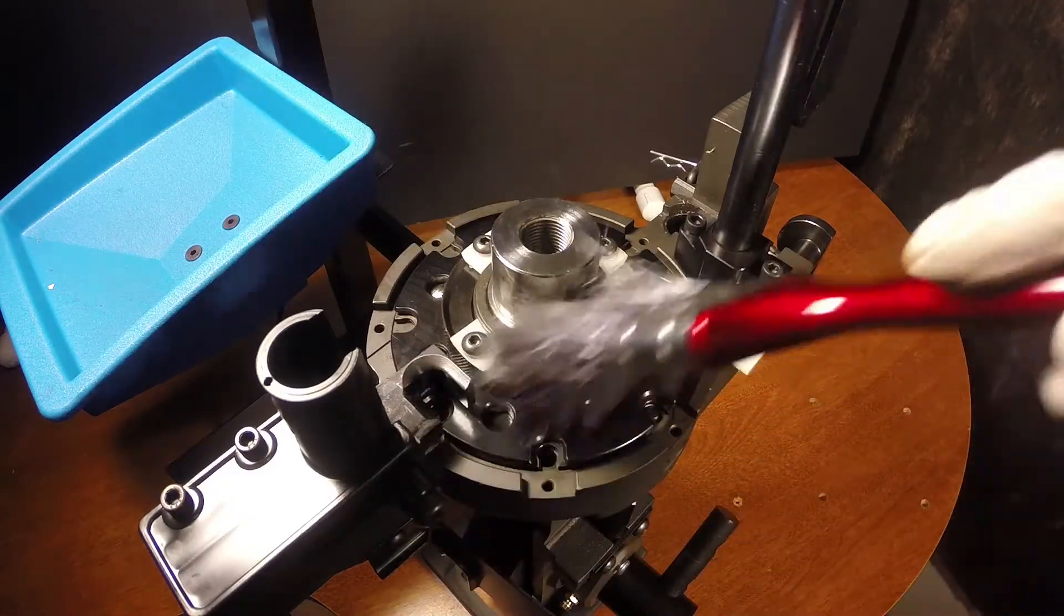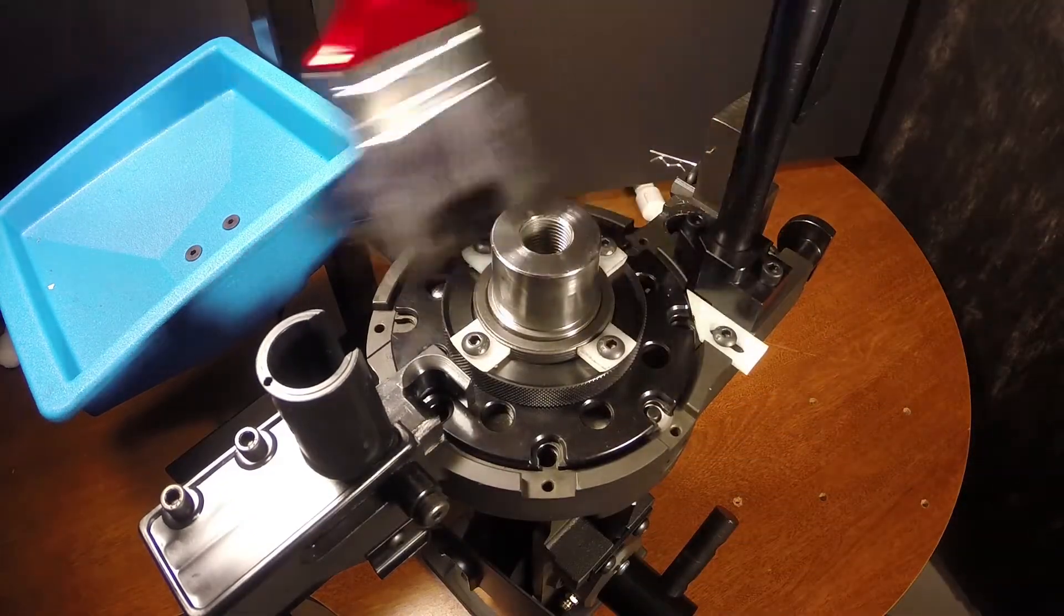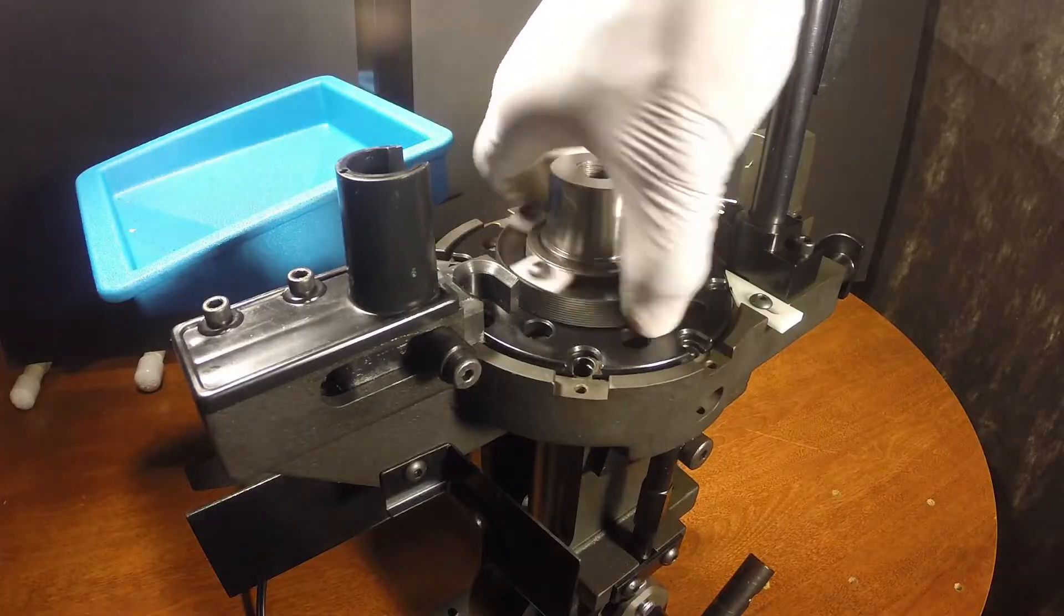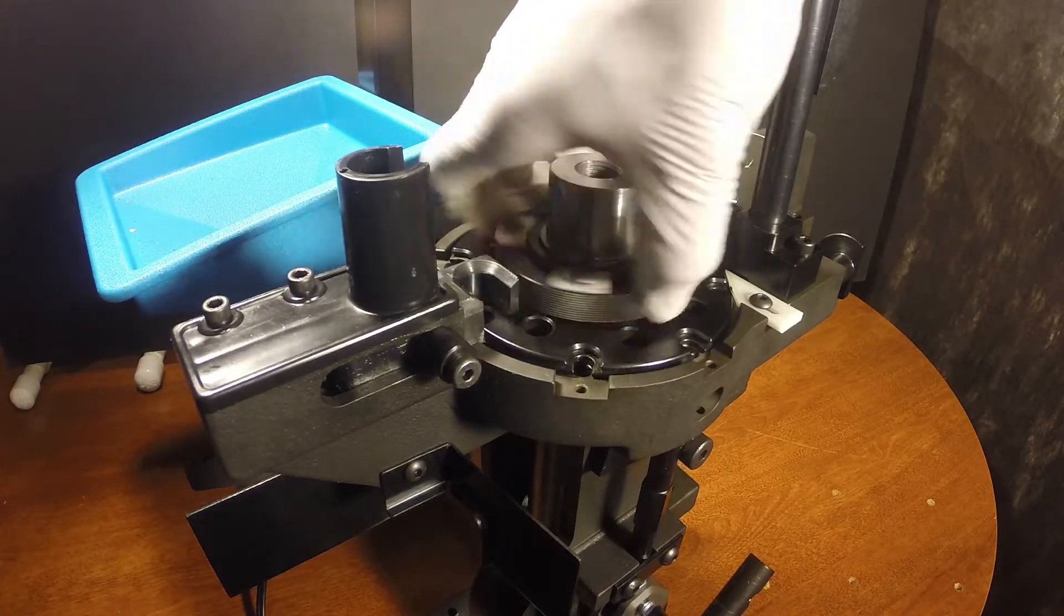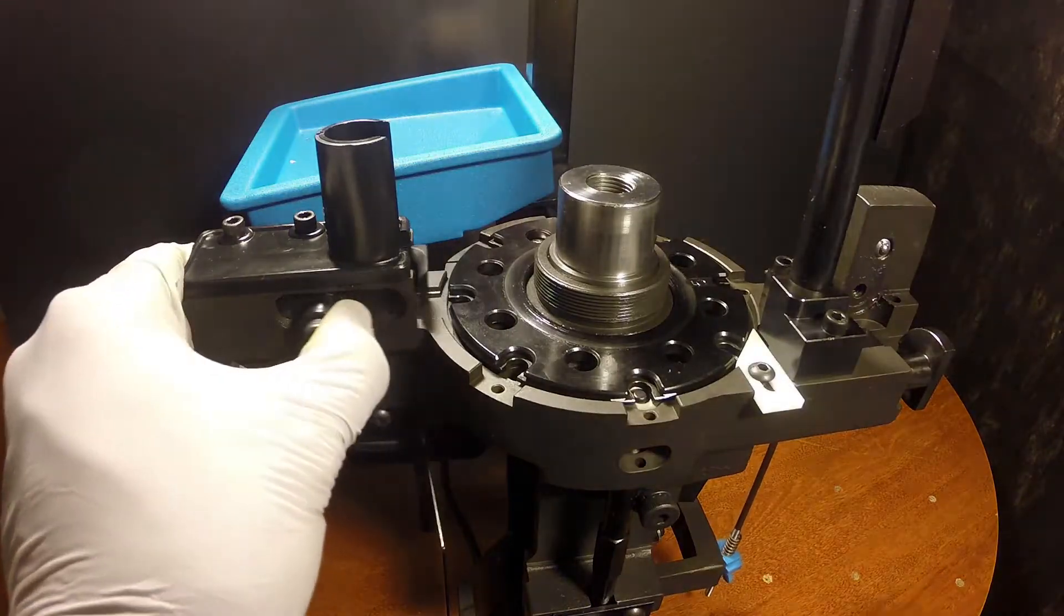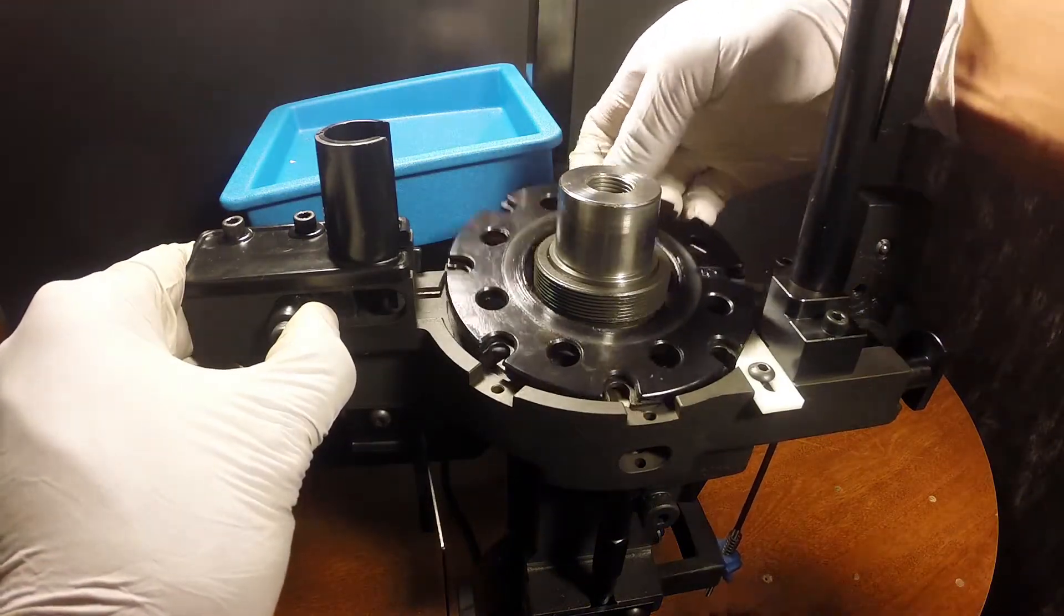Remove any powder that may be on the threads. Remove the lock ring. Now push the case feeder plunger back and lift the shell plate off.